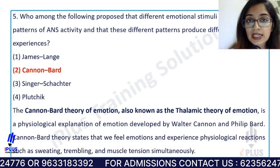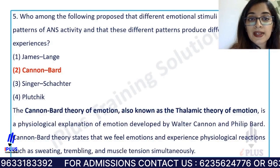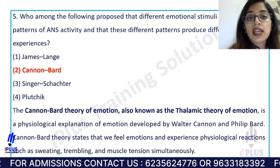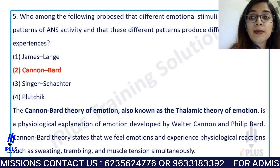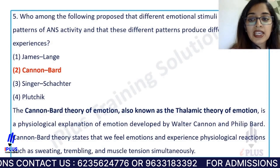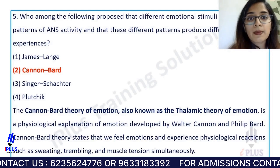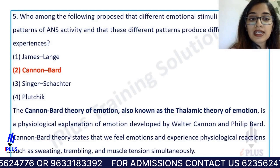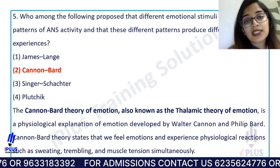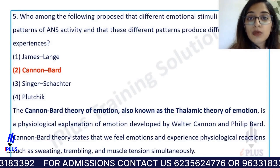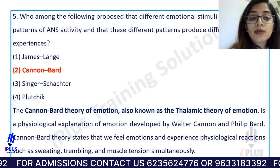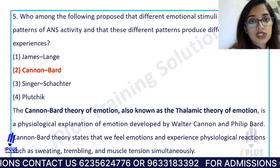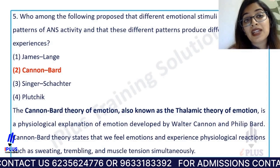The right answer is Cannon-Bard. Different emotional stimuli induce different patterns of ANS activity and produce different emotional experiences. This is the Cannon-Bard theory of emotion, also called the thalamic theory of emotion. We feel emotions because we have physiological reactions such as sweating, trembling, and muscle tension.